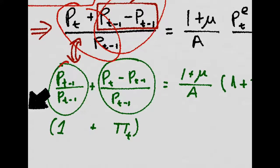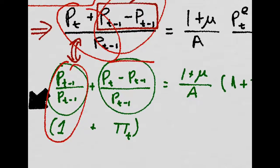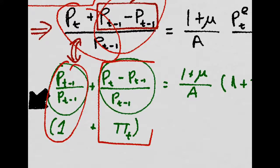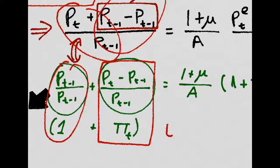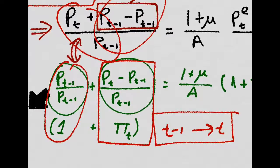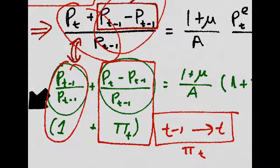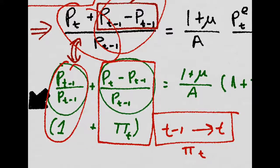And we realize that this is just 1 plus, and this is the change in prices from period t minus 1 to period t. But this is exactly the definition of inflation at time t, for which we use the symbol pi t.